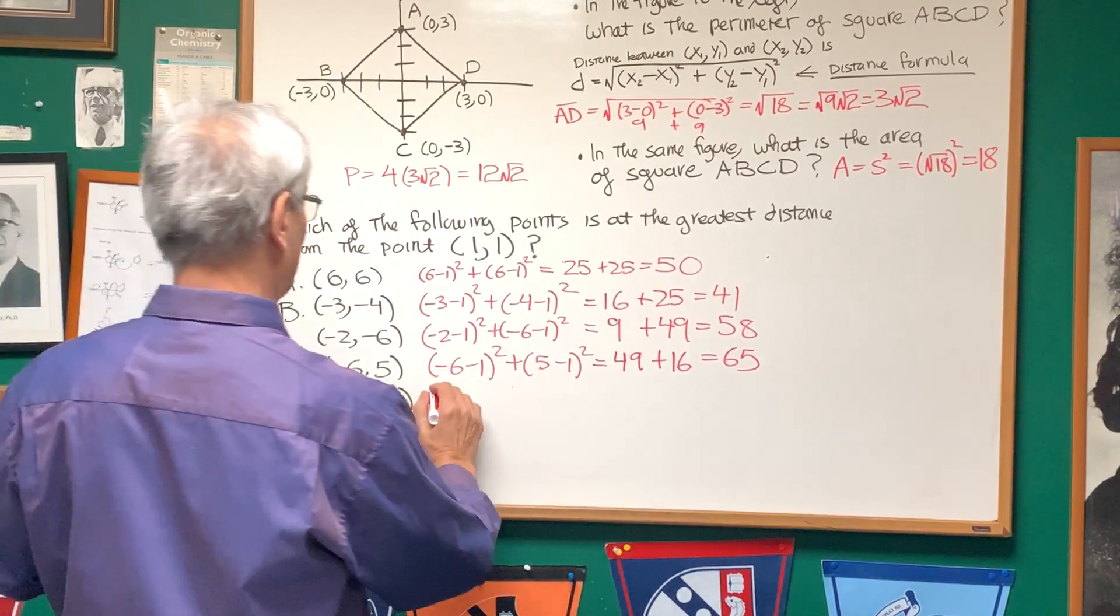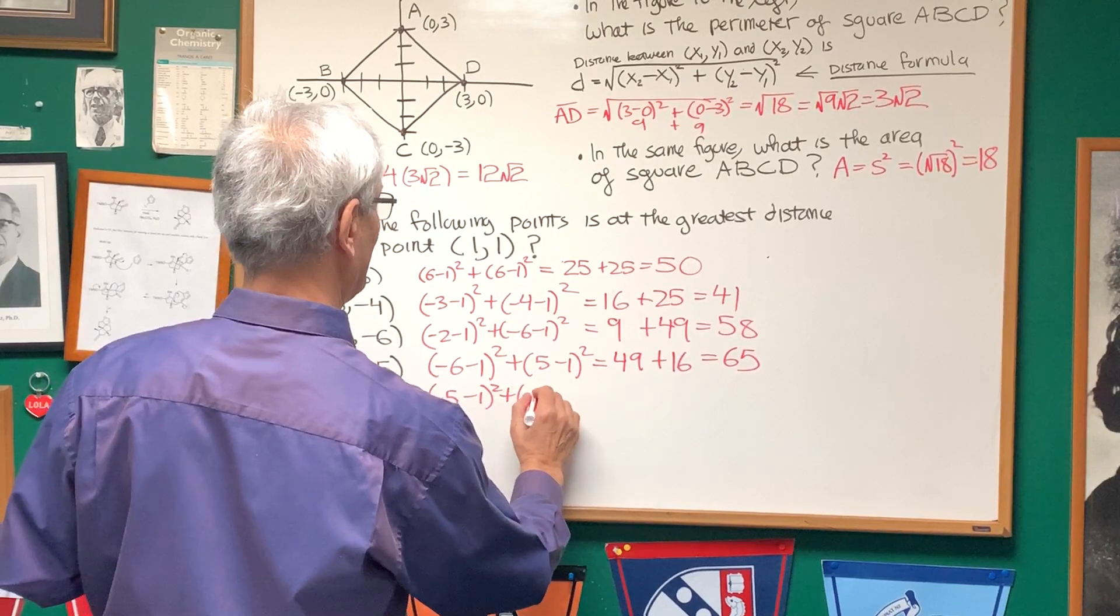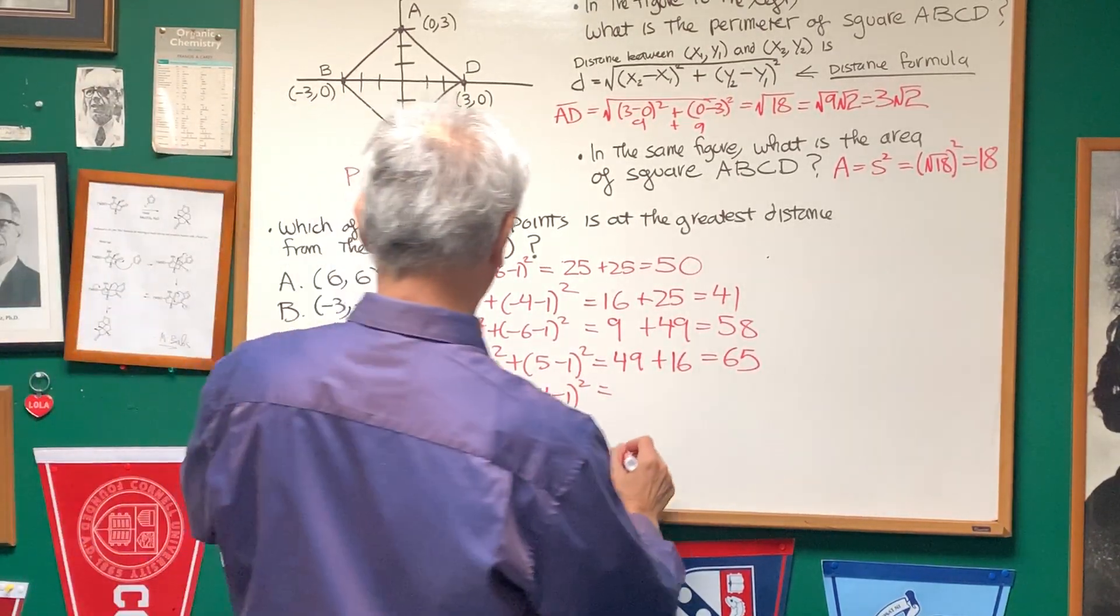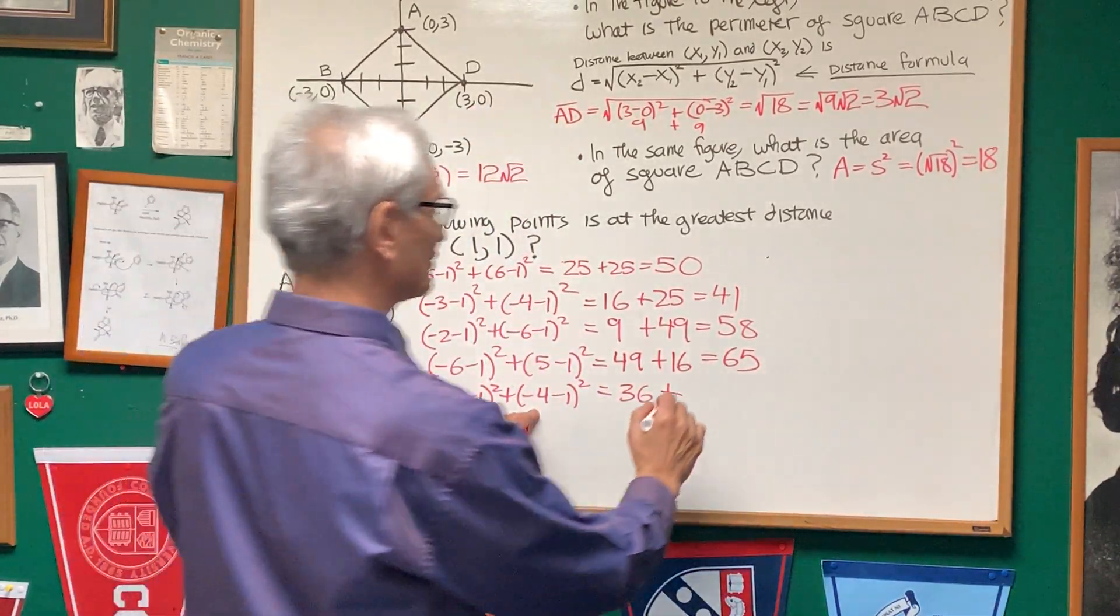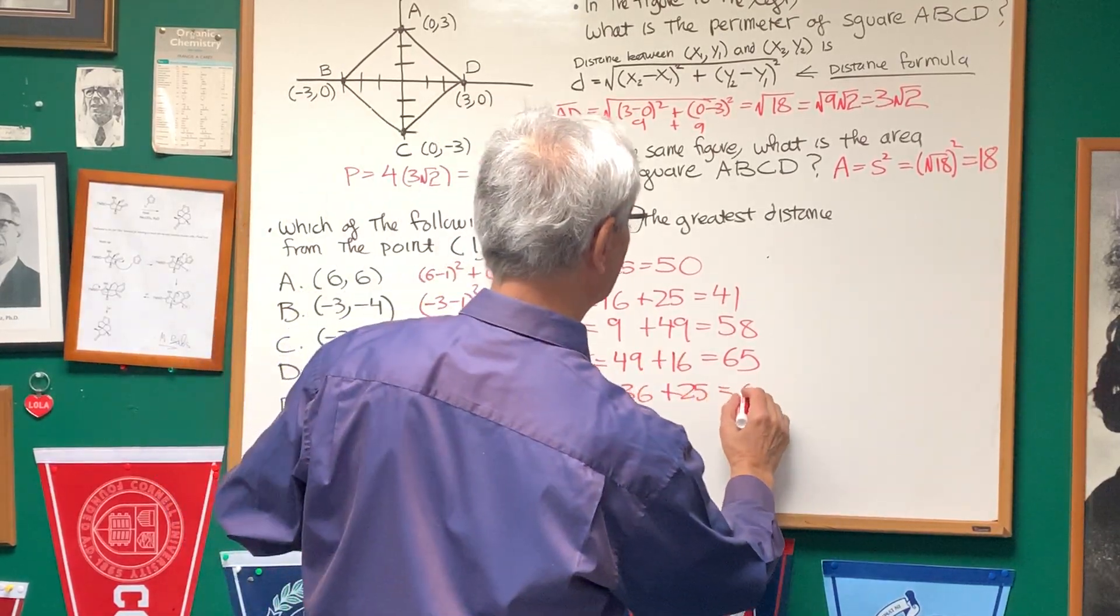And finally, negative 5, negative 4. We have negative 5 minus 1 squared plus negative 4 minus 1 squared. That's going to be negative 6 squared, which is 36, plus negative 5 squared, which is 25, and that's going to give us 61.